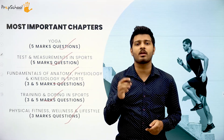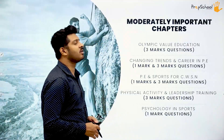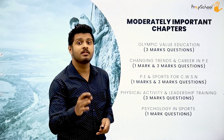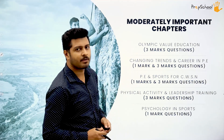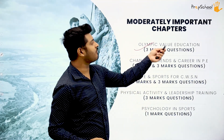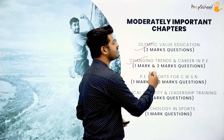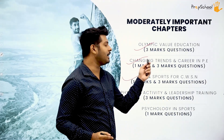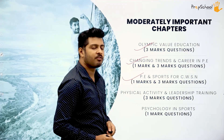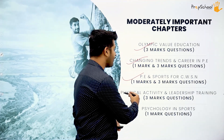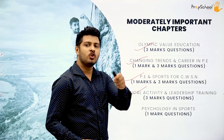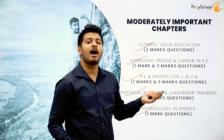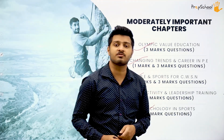The moderately important chapters include: Olympic value education — one mark and three mark questions. Changing trends and career in physical education — one mark and three mark questions. PE and sports for CWSN — one mark and three mark questions. Physical activity and leadership training — three mark questions. Finally, psychology in sports — mainly objective type, one mark questions.